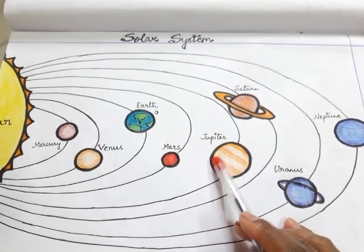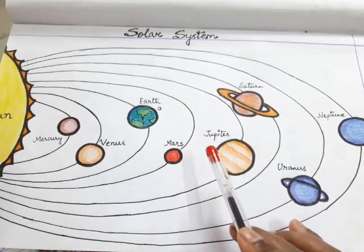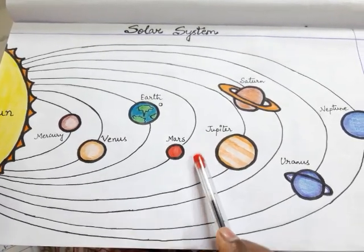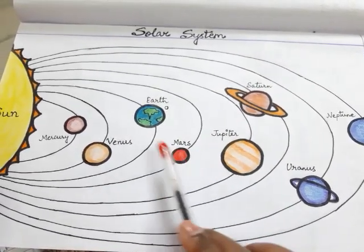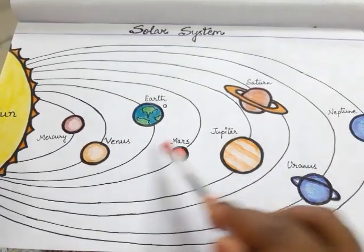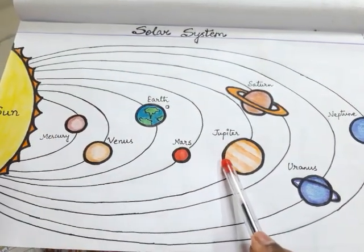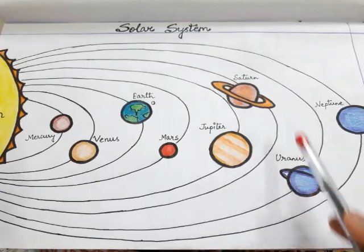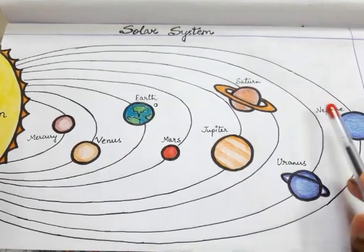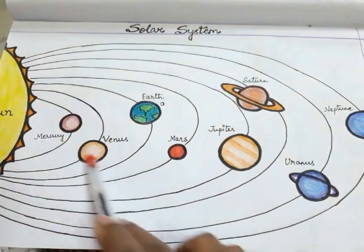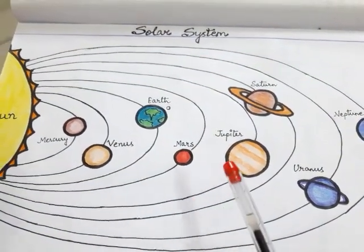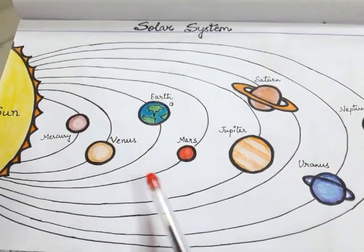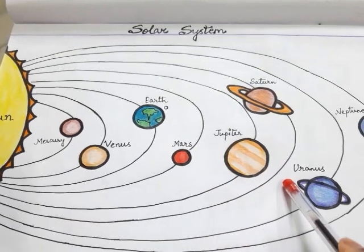Planets are heavenly bodies that move around the Sun. They do not have their own light and heat — they reflect the light of the Sun. There are eight planets: Mercury, Venus, Earth, Mars, Jupiter, Saturn, Uranus, and Neptune. Each planet moves around the Sun on its path called orbit.